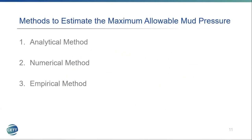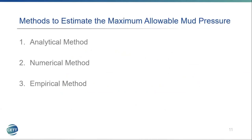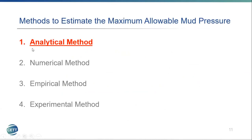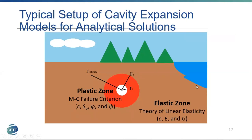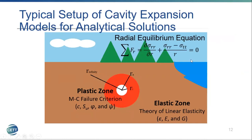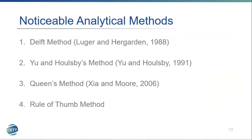There are multiple ways to estimate the maximum allowable pressure: the analytical method, numerical method, empirical method, and experimental method. My research focuses on the analytical method. For the analytical solution, they use cavity expansion theories. The notable analytical methods are the DELF method, the U and Whosebase method, Queen's method, and the rule of thumb method.